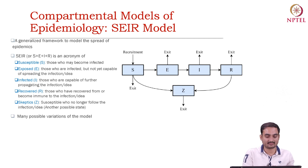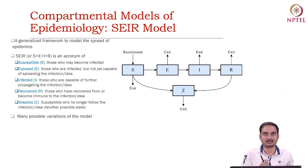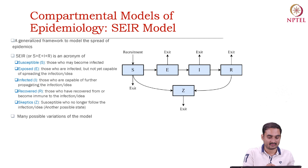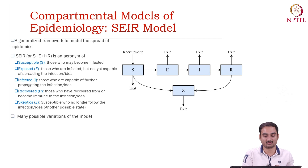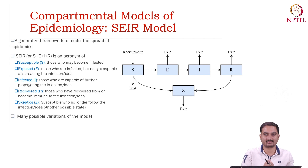The susceptible state S is basically a state of a node which is likely to be infected. E is the state of a node which indicates that the node has got exposed to that virus.